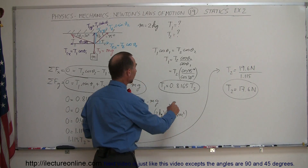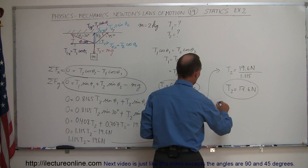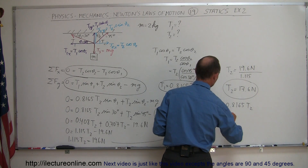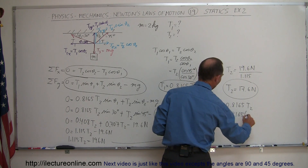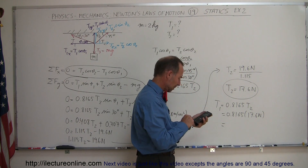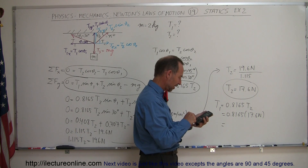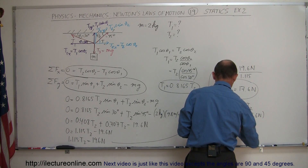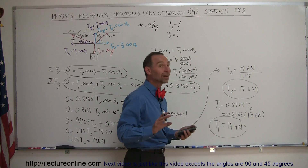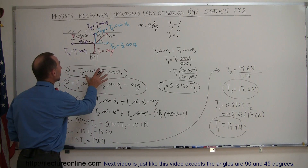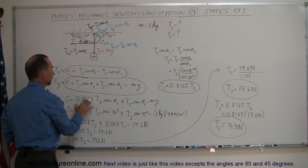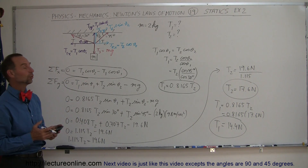Now that we know T2, we go back and use our earlier relationship: T1 equals 0.8165 times T2, which is 0.8165 times 17.6 newtons. So T1 equals 14.4 newtons. We now have both tensions. The process is to find the relationship between T1 and T2, plug that in, and solve each unknown.